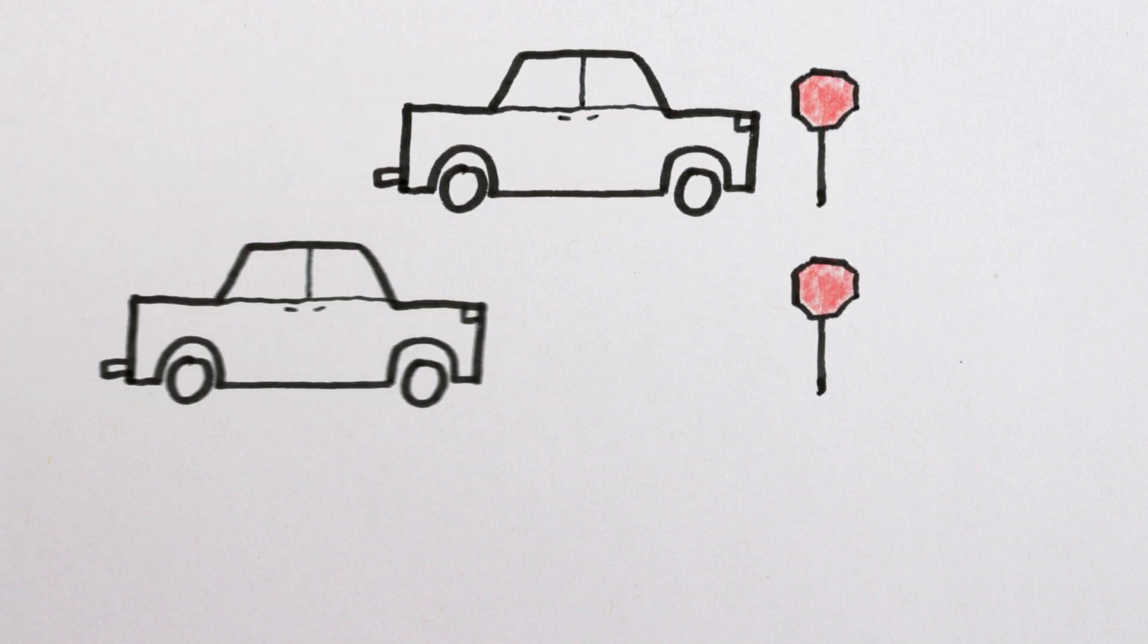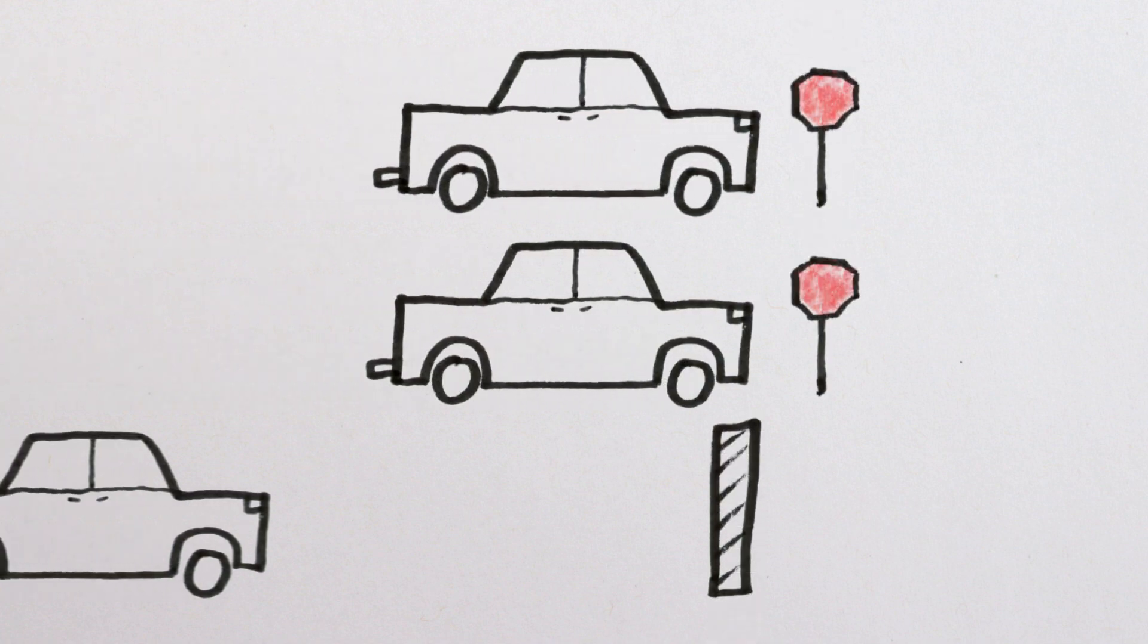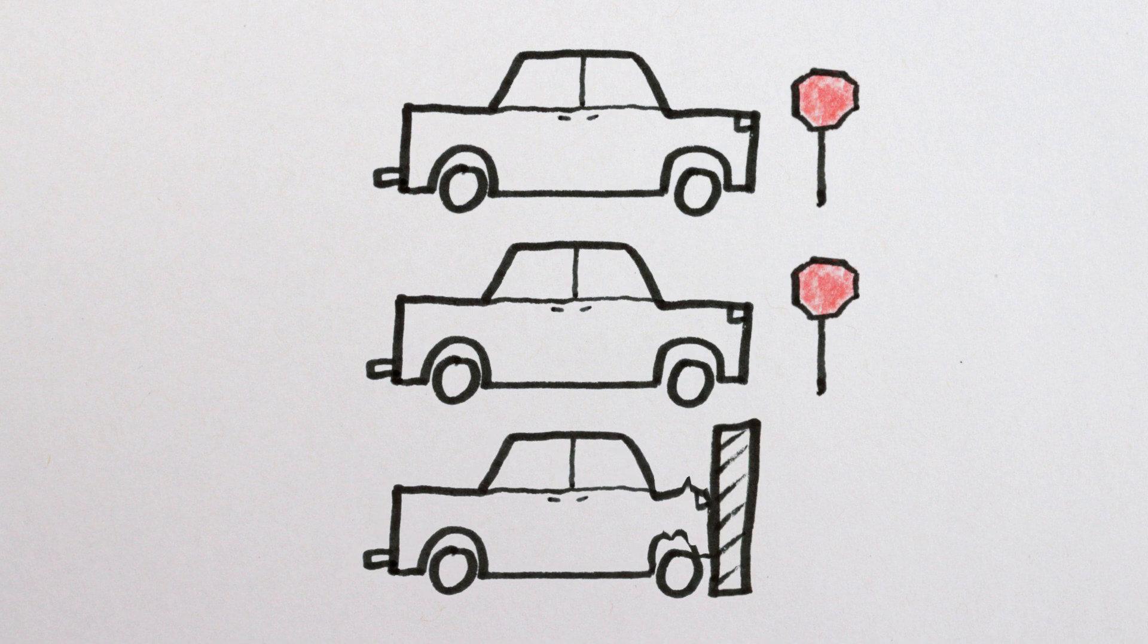And just like how smooth braking is nicer than a quick, jerky stop, cars are carefully designed to crumple when they crash, in a way that lengthens the duration of the impact so that stopping requires less intense acceleration.